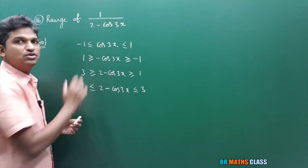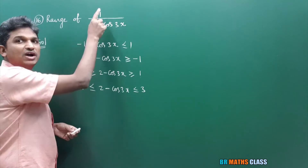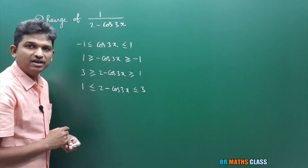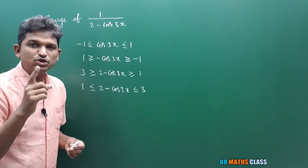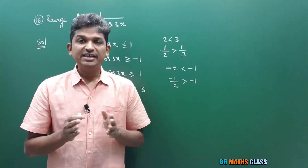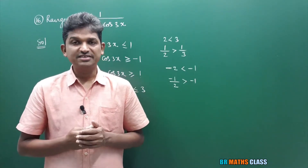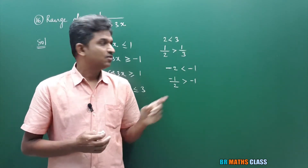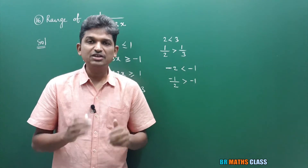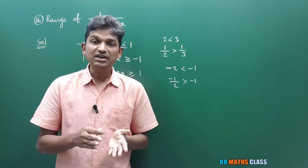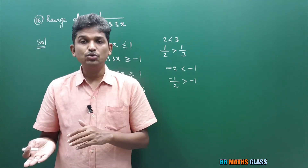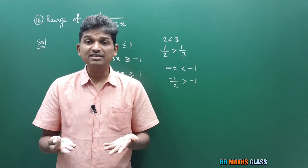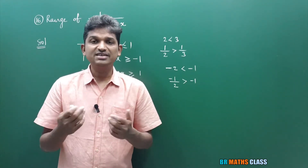I want the range of this function. 1 divided by (2 minus cos3x) is the reciprocal of this. While doing reciprocals, you need to keep this point in mind: for an inequality, when you write its reciprocal, if both numbers are positive, the inequality sign changes. When both numbers are negative, the sign also changes. If one is positive and another is negative, we cannot say whether the inequality changes or not.